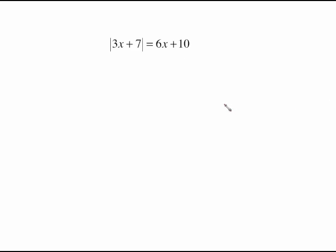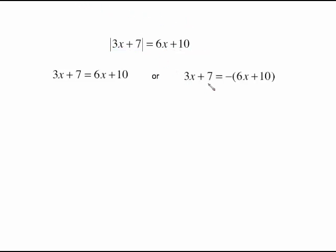This is the second video on solving absolute value equations. We will do the same thing we did in the first video: when you solve an absolute value equation, you must set up two cases. The first case is the positive case, which is just the problem with the bars removed. The negative case is what's inside the bars equal to the negative of the other side — but since that side is a binomial, we need a negative in front of parentheses.